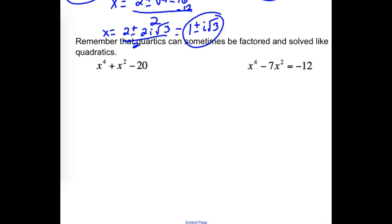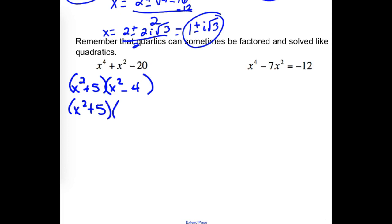These are quartics — because they're x to the fourth. Think of four quarters. We can factor them using the same patterns as quadratics. Instead of x squared splitting into x and x, we have x to the fourth splitting into x squareds. We need two numbers that multiply to be negative 20 and add up to 1: positive 5 and negative 4. Can we factor either of those more? A difference of squares we can break down further. That would be your final answer.